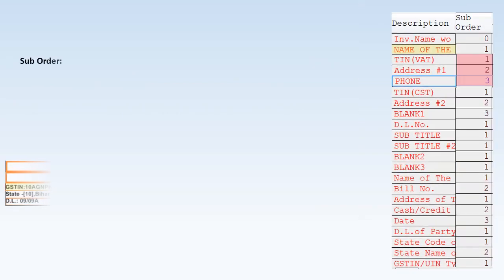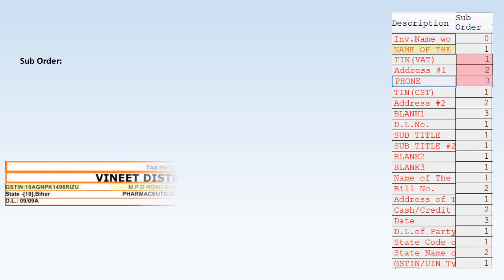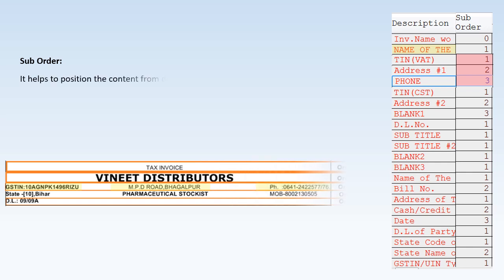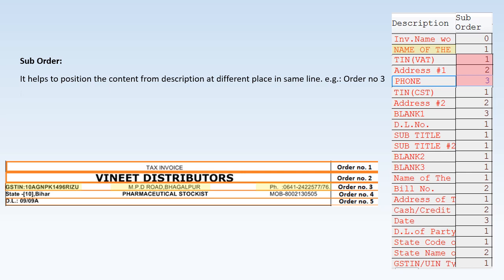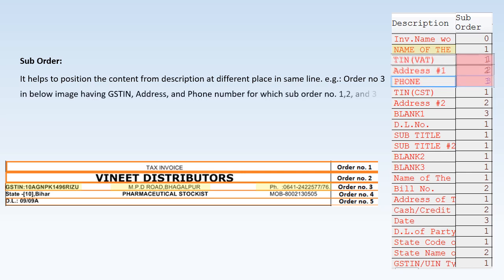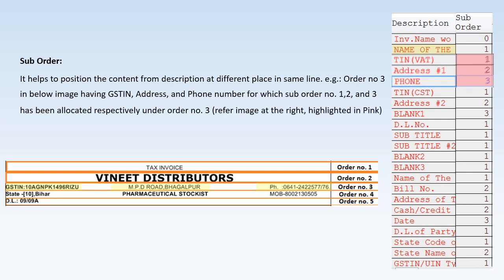Suborder helps to position content from the Description at different places in the same line. For example, at order number three, GSTIN, address, and phone number have been allocated suborder numbers one, two, and three respectively under order number three — refer to the image on the right highlighted in pink.